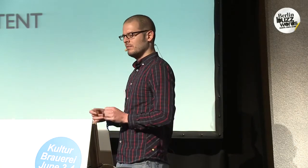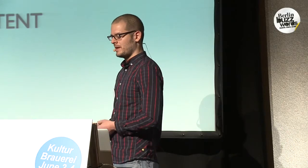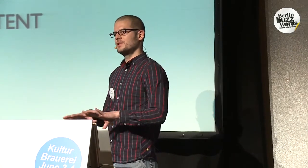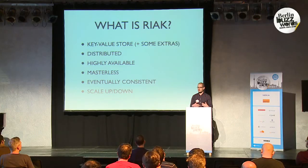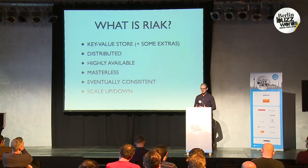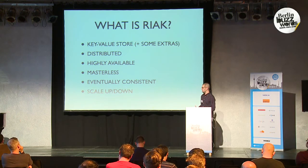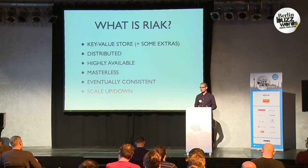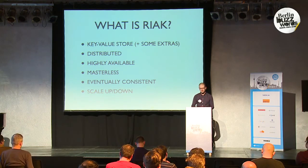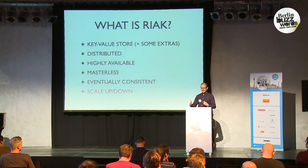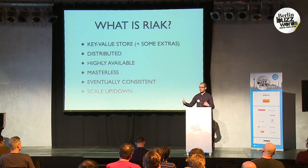A lot of people think eventually consistent means you do the write and it gets copied in a few milliseconds, and I think that really misses the point. It's more about the fact that if you compare it to an ACID database, like Postgres or something like that, the consistency is guaranteed up front. Eventual consistency is about relaxing the consistency requirements up front and having them eventually converge on the back end when you do a read — and the purpose of that is that you can gain availability. React also has the notion of scale up and scale down: you can add and remove nodes as you need to depending on your load, and as you add nodes you can get an almost linear scale-up of your operations.